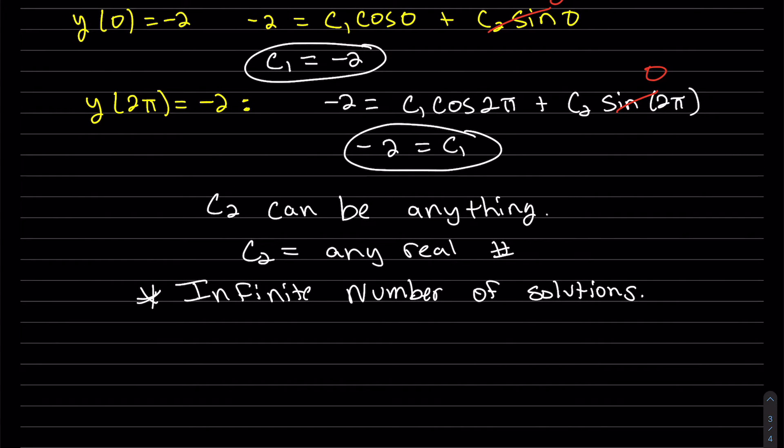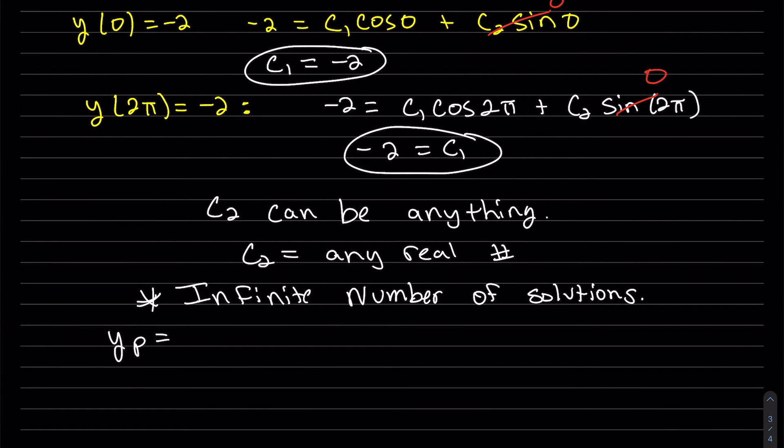And this is an infinite number of solutions. So our y_p here, our particular solution here, is C1. Oops, sorry. We found C1 to be negative 2 cosine of 2x. Well, since it is a particular solution, we have to choose something. We choose any C2. We'll just choose one, maybe.